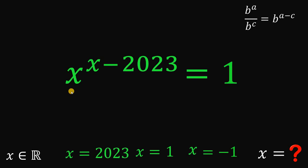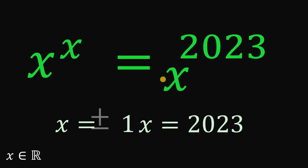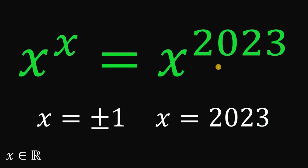So given the equation x raised to the power of x equals x raised to 2023, the values of x that satisfy this equation are x equals positive 1, x equals negative 1, or x equals 2023. And that is the answer to this question.